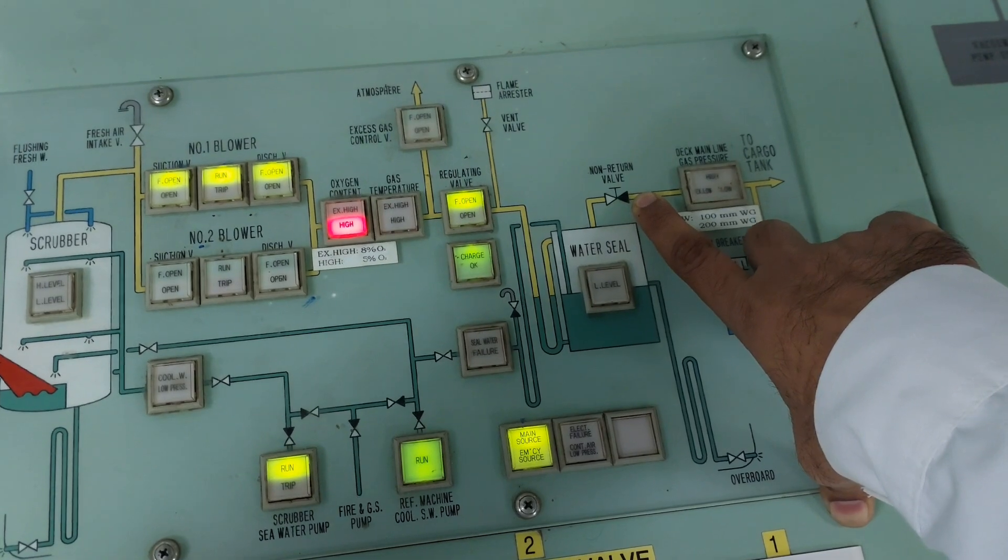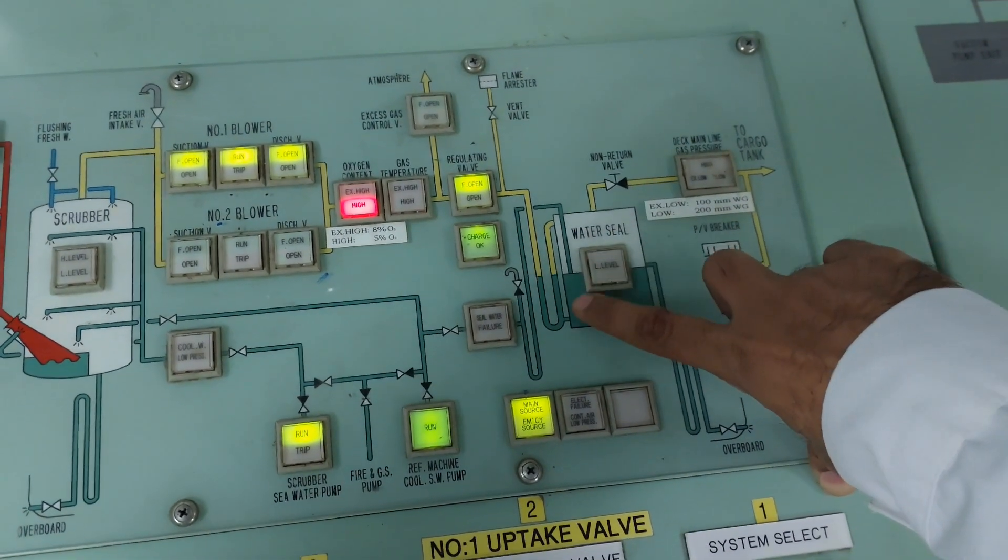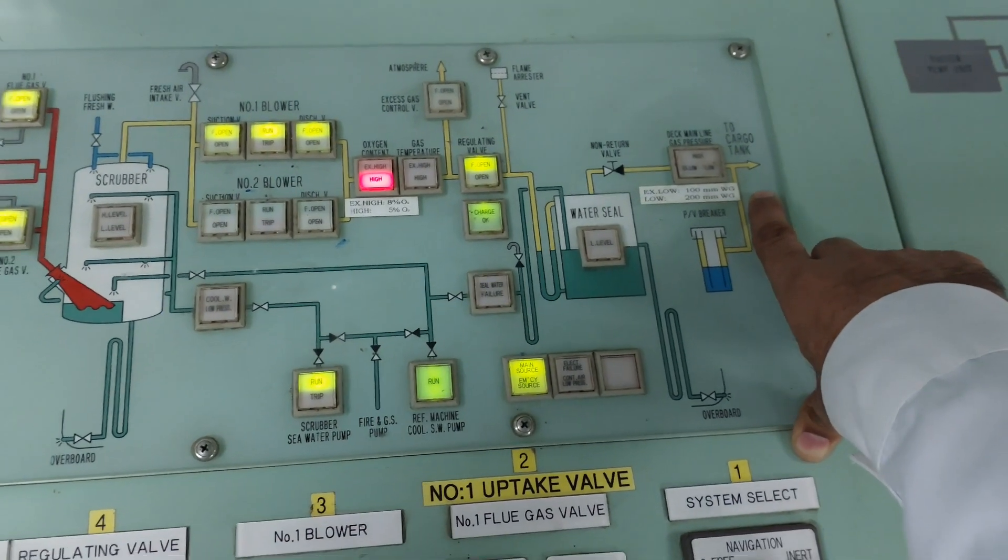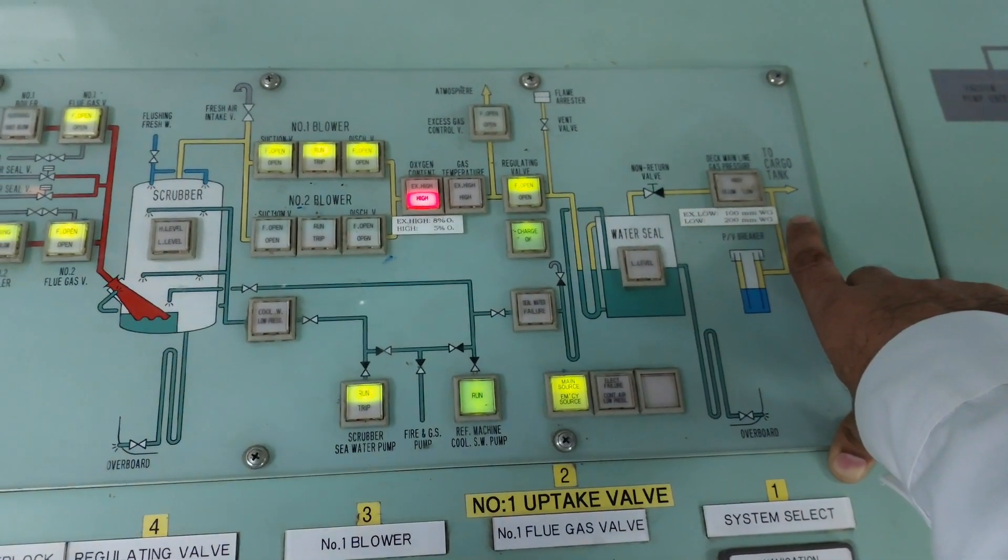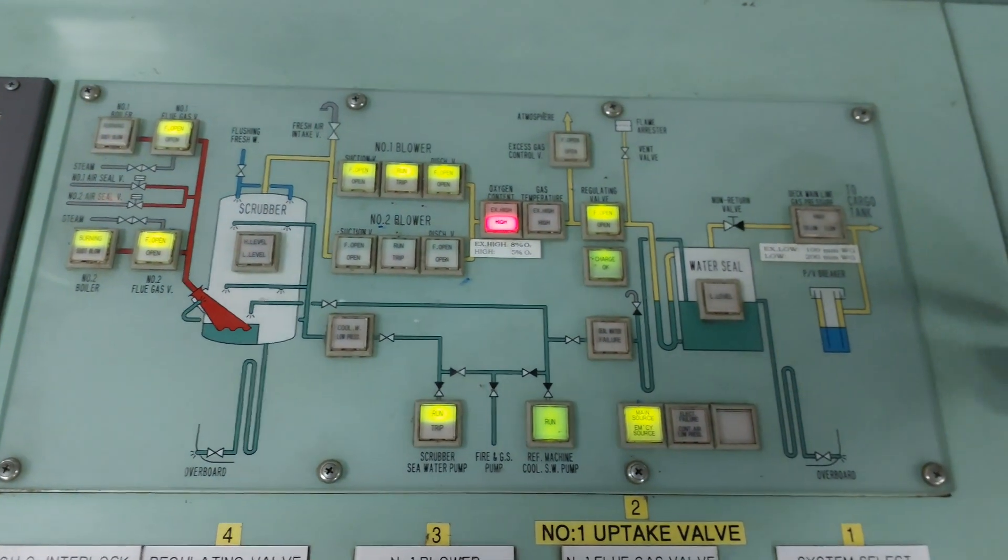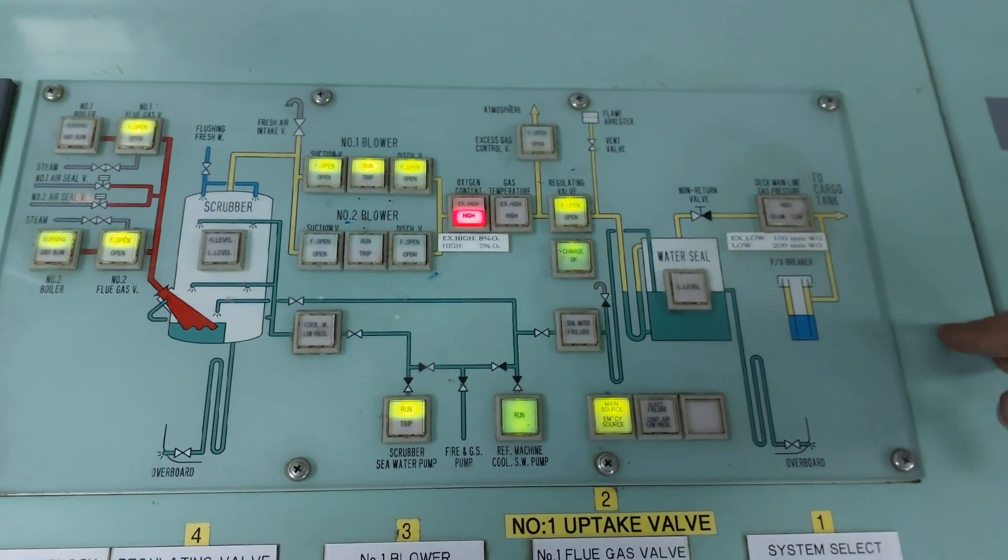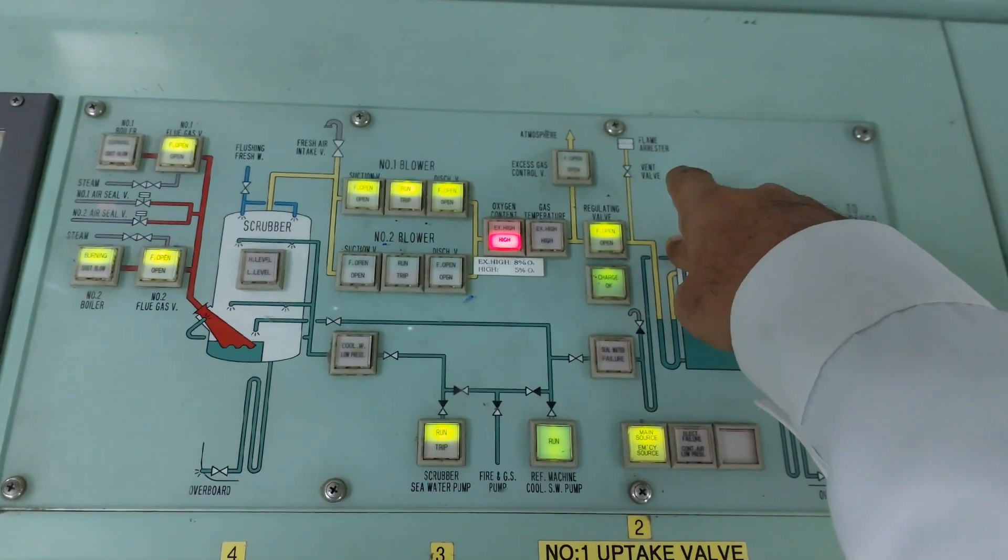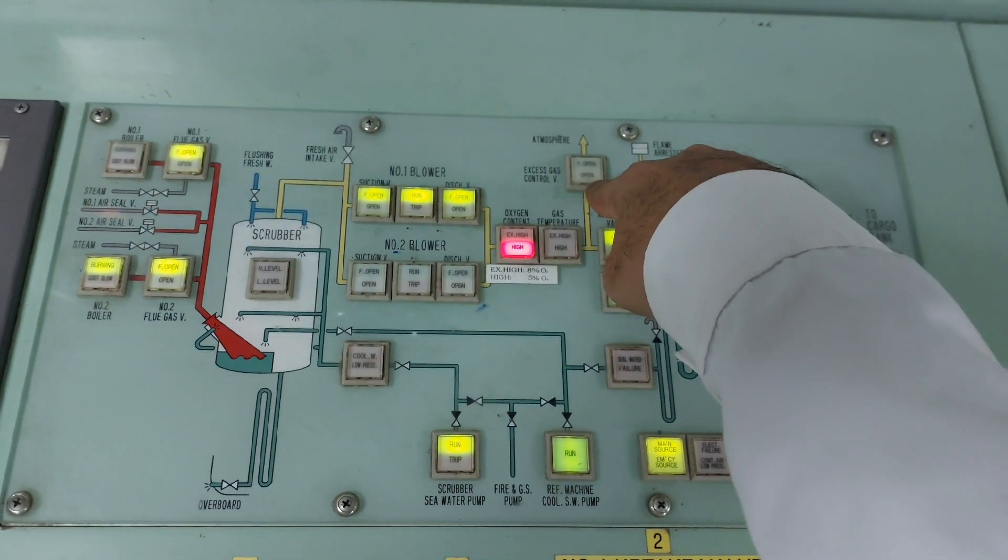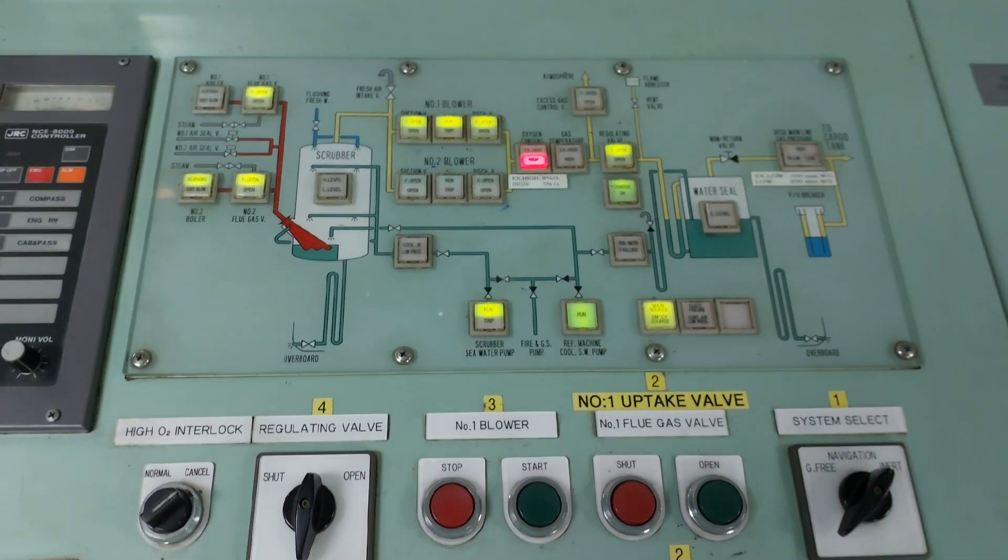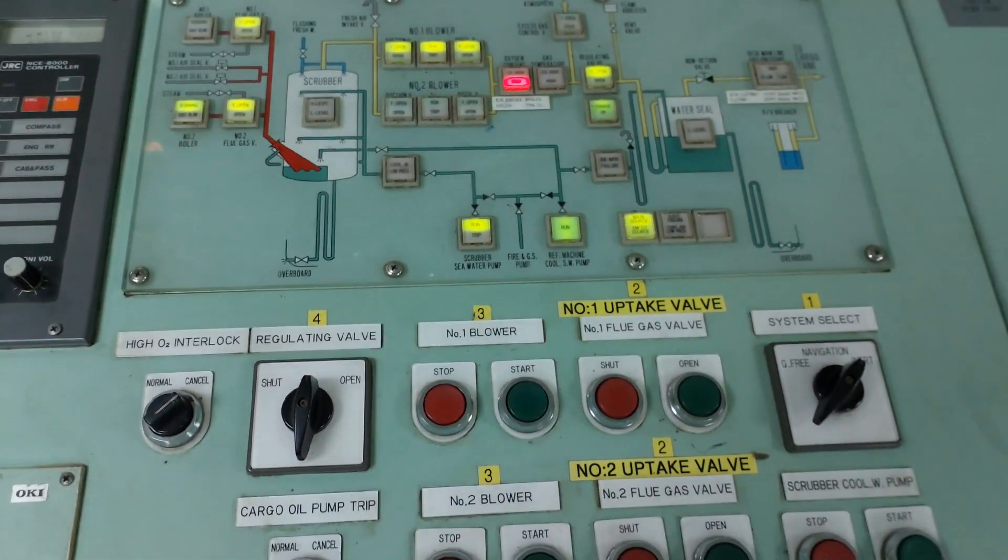From deck seal, the IG will go to tanks. This is not a big deal. First, open non-return valve and IG isolation valve. Open this regulating valve, close atmosphere valve. The IG is running normally. That's all. Thanks for watching, see you next time.